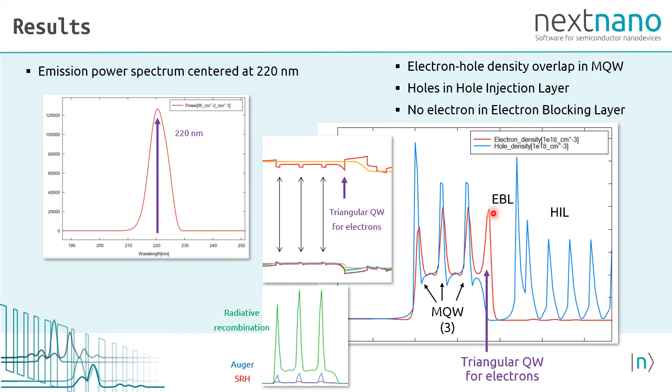Therefore, the hole density in this area is very small, but we have a hole injection layer where we have a significant hole density. The electron blocking layer avoids electron density in this region. So our densities look as expected. Optimization could be done in this triangular region to get these electrons back into the multi-quantum well region.